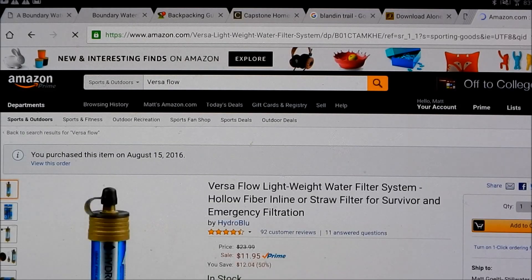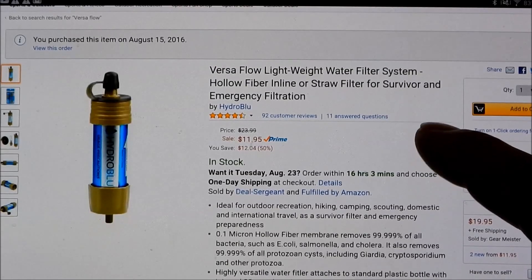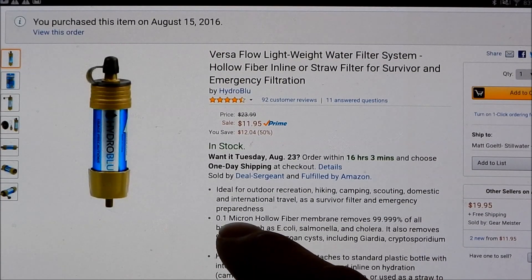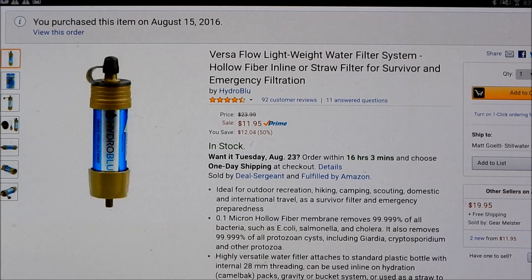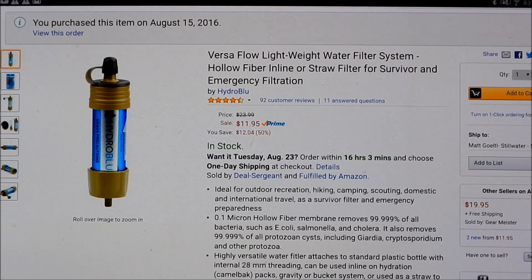As you can see it has the 0.1 micron hollow fiber membrane, removes 99.999% of all bacteria and removes 99.999% of all protozoan cysts including Giardia and Cryptosporidium, which is the exact same specifications as the Sawyer Mini. So let's add that to the cart.